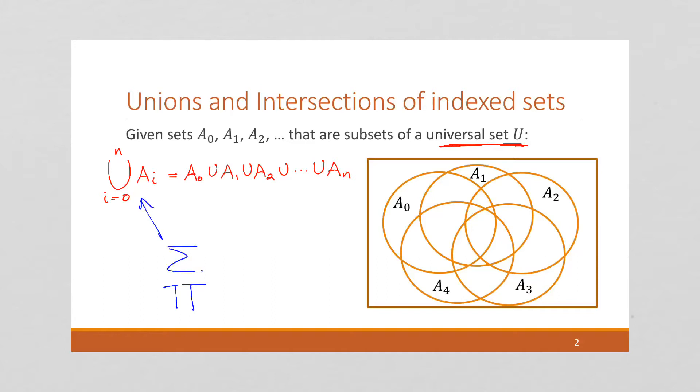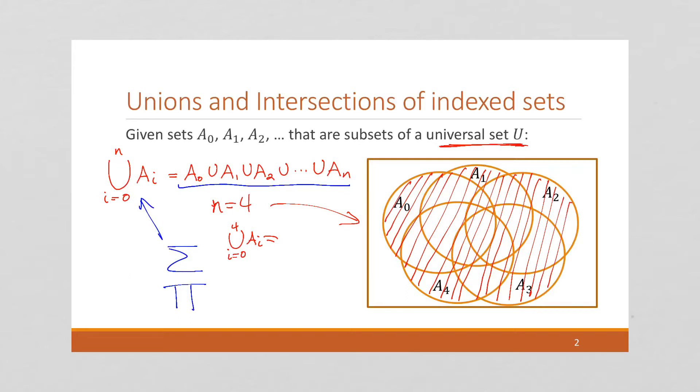And it's useful for talking about when we want to union a large number of sets. So if n is 4, as in this example, then we have the union of i equals 0 to 4 of A_i is going to equal anything that's in A_0 or A_1 or A_2 or A_3 or A_4. Because the union is kind of like an or, and it's going to include everything that's in any of these sets. So this is the union. It's that entire region.